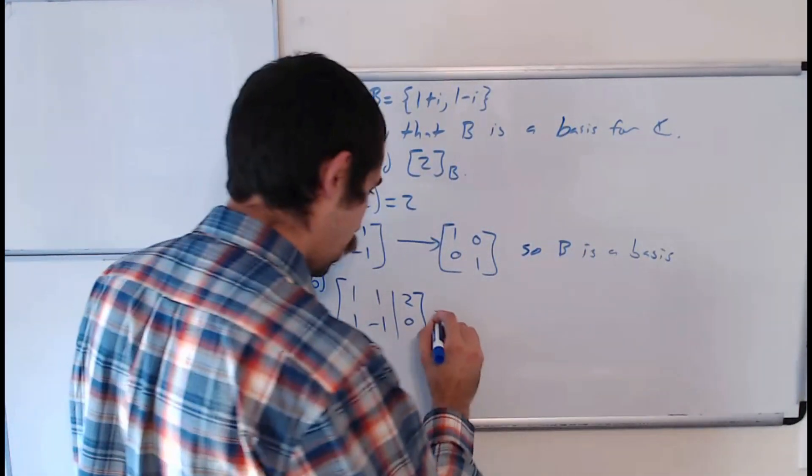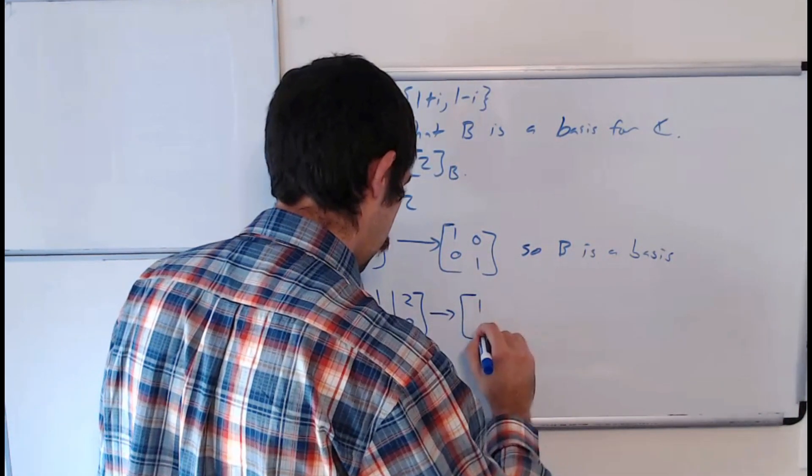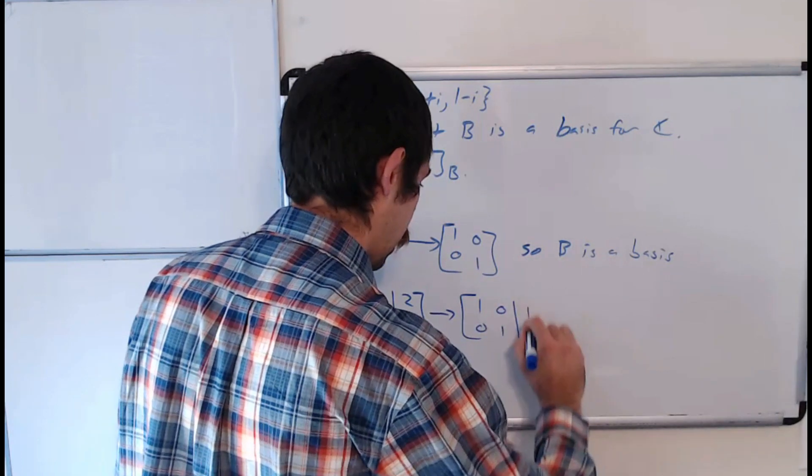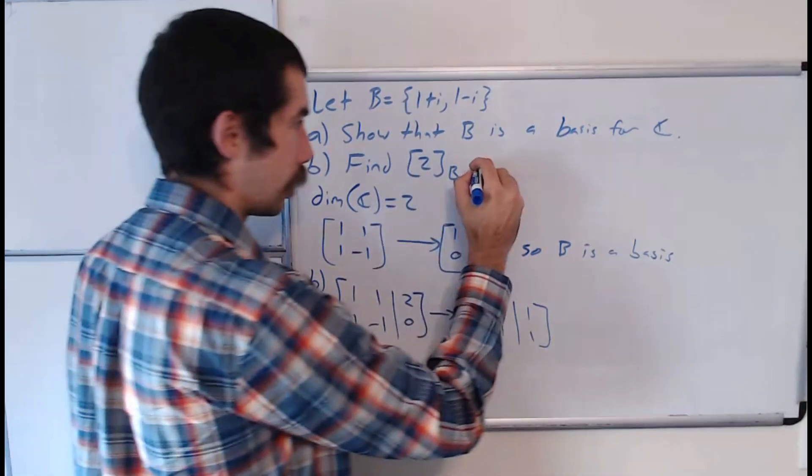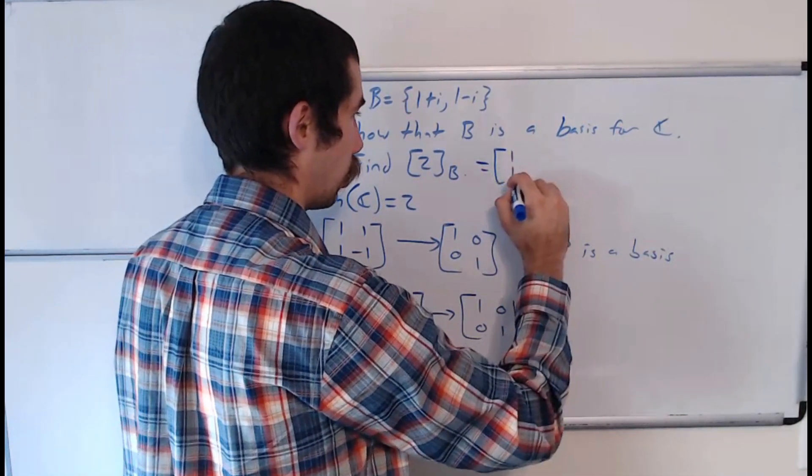Then we would row reduce again, and what it row reduces to is the identity on the left and [1, 1] on the right. So the B-coordinate for 2 is the vector [1, 1].